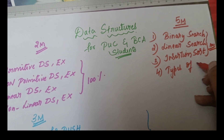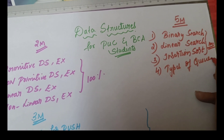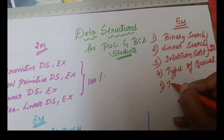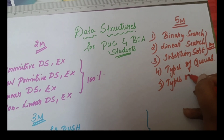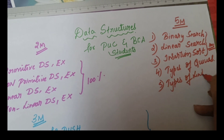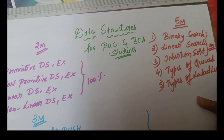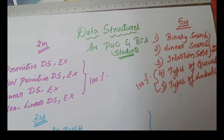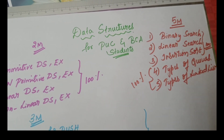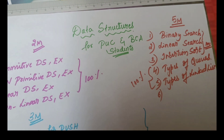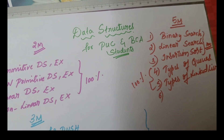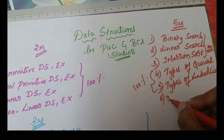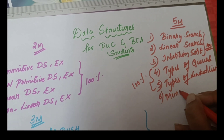Some students confuse insertion sort with insert element into array — but insert element into array is a small algorithm, while insertion sort is about arranging and sorting elements using a temporary variable, making it lengthy. Among these three, one will be compulsory. Next, types of queues and types of linked list — among these two, one is compulsory.